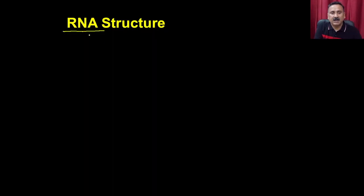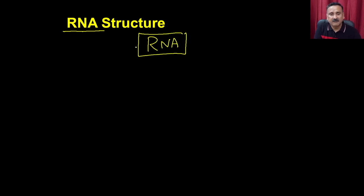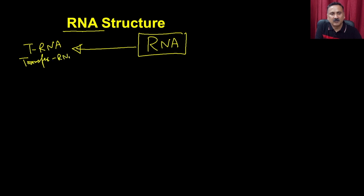When we talk about RNA, we are going to talk about three different types. We have the transfer RNA, commonly known as tRNA — this is called transfer RNA. Then we also have the ribosomal RNA, or rRNA.